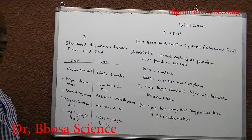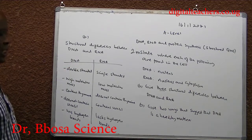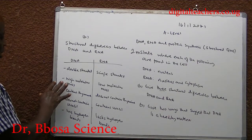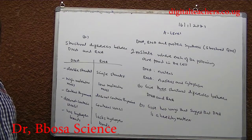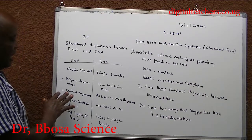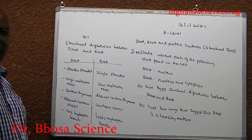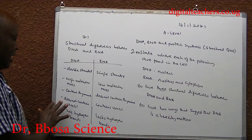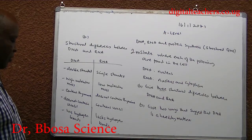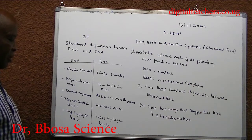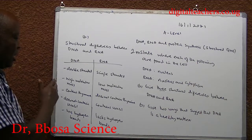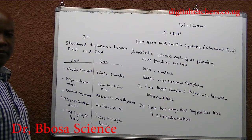Structural differences between DNA and RNA: DNA is double-stranded; RNA is single-stranded. DNA has high molecular mass; RNA has low molecular mass. DNA contains thymine; RNA lacks thymine. DNA has hydrogen bonds; RNA lacks hydrogen bonds. You can choose any two from these.